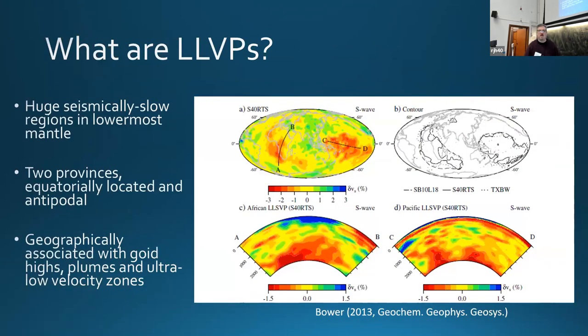So what are LLVPs? There's been a lot of apologies for acronyms and this one deserves one as well. They're often referred to as LLVPs, large low velocity or shear velocity provinces. They're also seen in P wave records, which is why I drop the S.